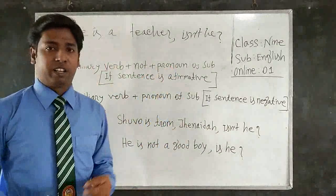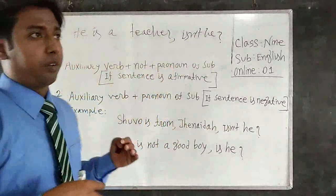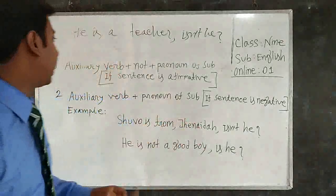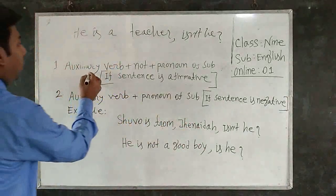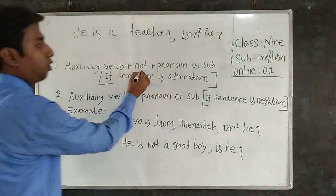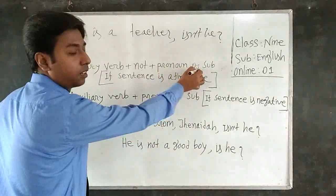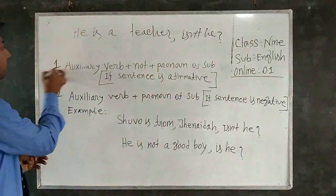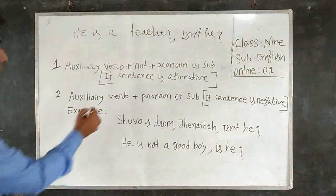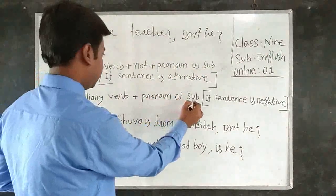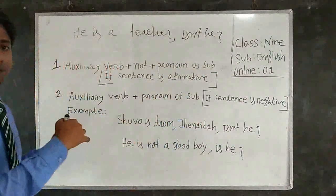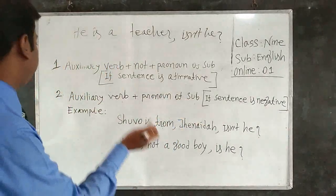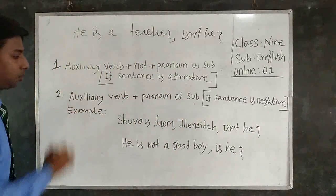Now I will discuss the basic structure of tag questions. There are two main structures. Number one: auxiliary verb + not + pronoun of subject — used when the sentence is affirmative. Number two: auxiliary verb + pronoun of subject — used when the sentence is negative.